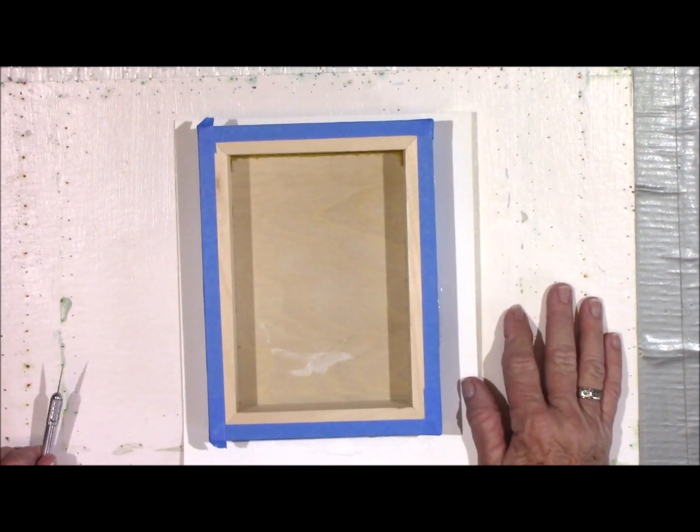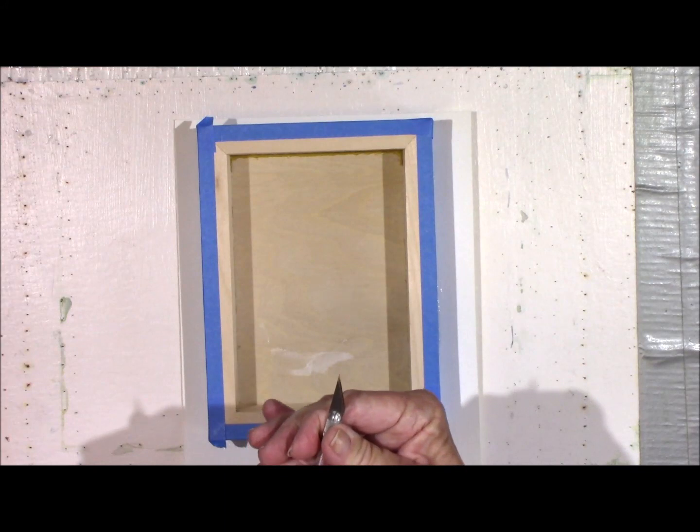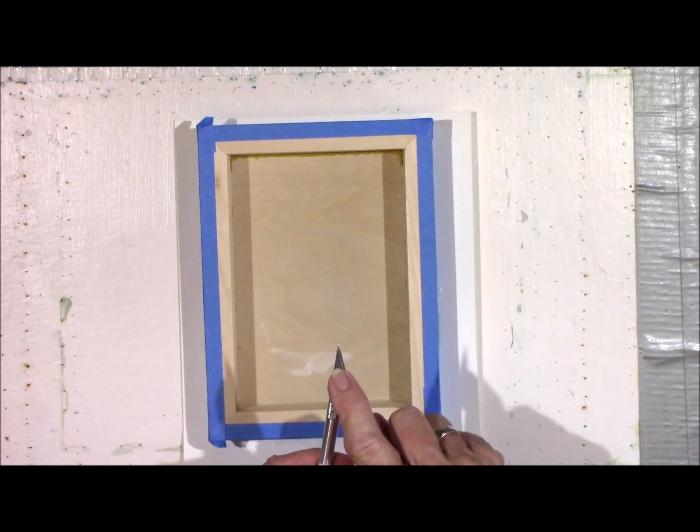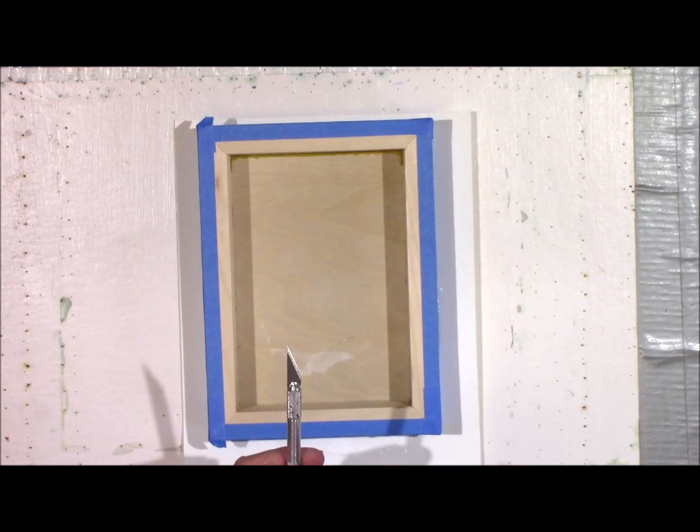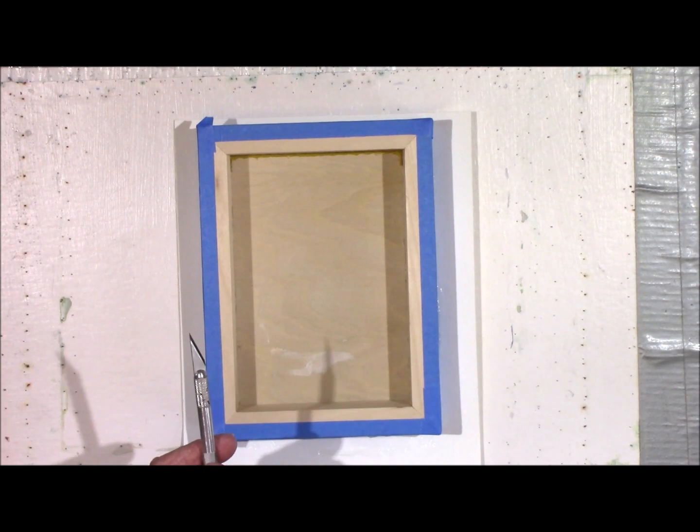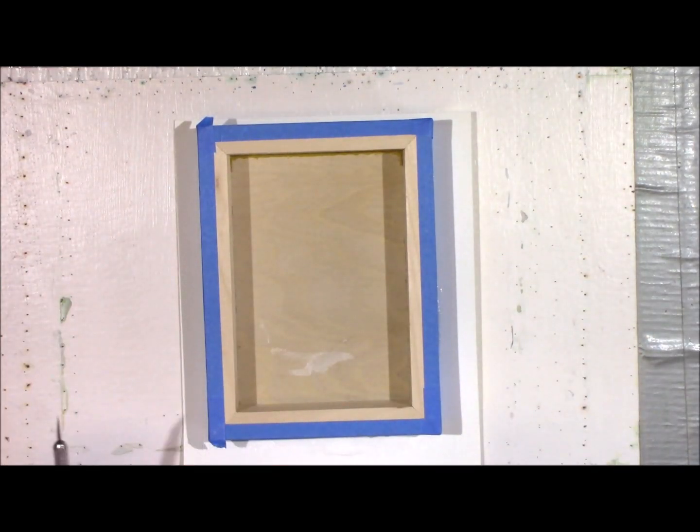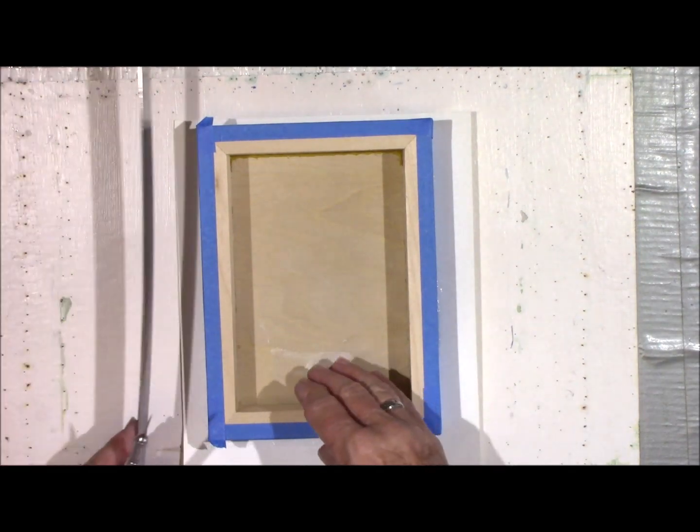What I do is make sure that my blade is in really tight. I make sure that I've got a new blade in there so that it cuts really good, because a dull blade makes it harder to trim it and also leaves little frayed edges.